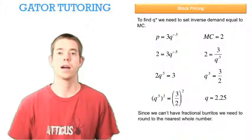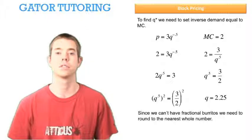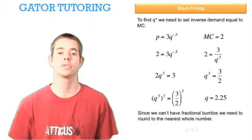Remember, we cannot have fractional burritos. So we need to round to the nearest whole number. In this case, 2.25 rounds to two.